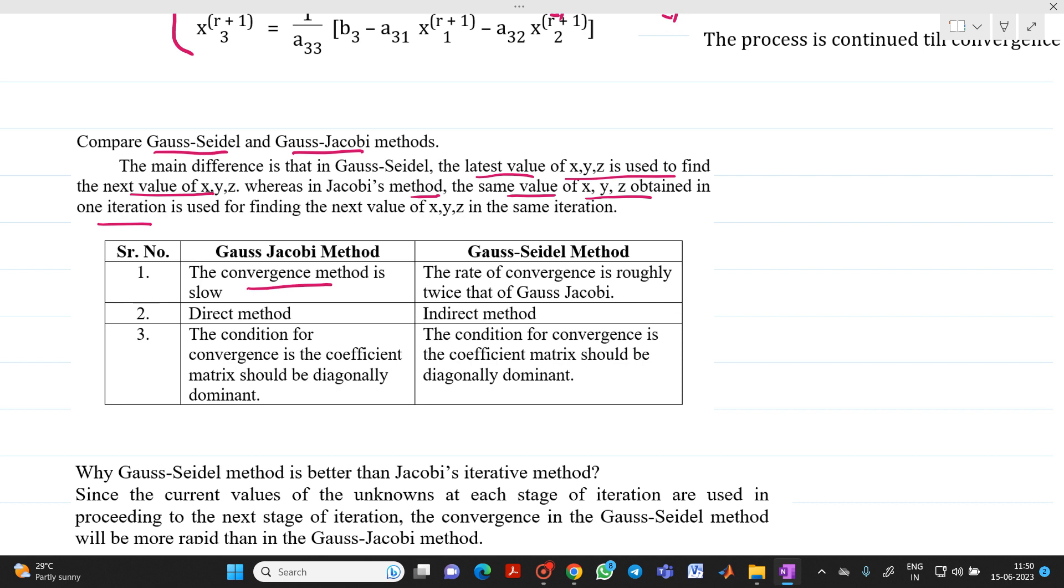So if you see, the convergence method or convergence is less or slow in case of Gauss-Jacobi method. Means what? Suppose by solving one set of equation by Gauss-Seidel method, if you are getting answer at the end of fifth iteration, then it will take more iterations to solve same equation by Gauss-Jacobi method. Let's say 8th or 10th, that depends upon equations.